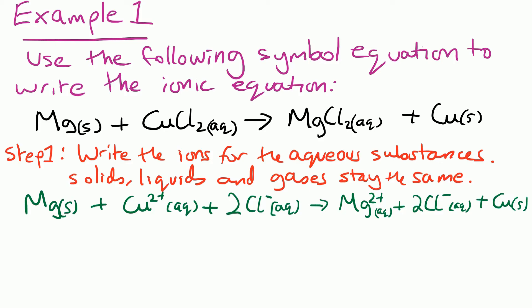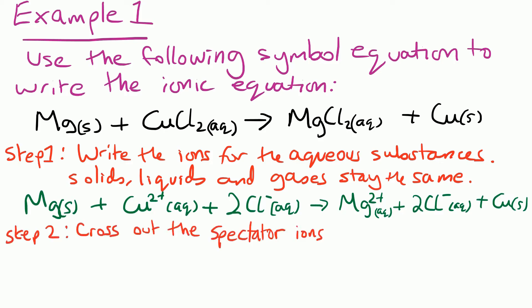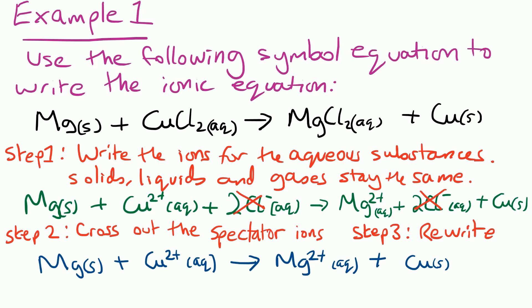Step two is to cross out the spectator ions. These are ions that don't change from before the arrow to after the arrow — so during the reaction they don't change. We can see in this equation it's the Cl⁻ that are the same on both sides, so we can cross those out. Step three is to rewrite the equation without the spectator ions, and that is our ionic equation finished.